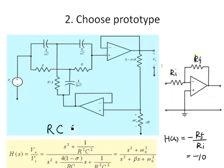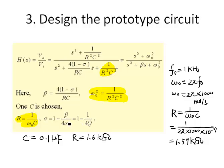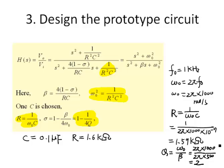There are three parameters in the circuit we need to specify: R, C, and sigma. Sigma can be calculated based on the equation 1 minus 1 over 4Q, where Q is the quality factor defined as central frequency over bandwidth. The central frequency is 1000 Hz and we want beta to be 500 Hz, so the quality factor Q is 2. Substituting Q into the equation, sigma equals 1 minus 1 over 4 times 2, giving sigma equal to 0.875.